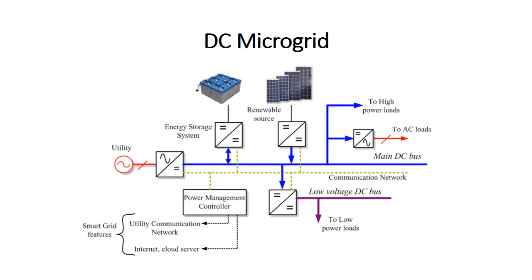DC microgrid: many renewable energy sources produce power in DC, so we use a DC-to-DC step-up converter and that DC power is connected to the main DC bus. The energy storage system uses a DC-to-DC converter and is also connected to the main DC bus. Since utility generates electricity in AC, we convert it from AC to DC and connect it to the main DC bus.